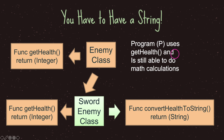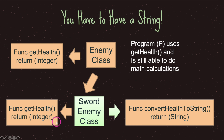Program P can call the enemy class's get_health function expecting an integer, and if we have program P point to the sword enemy class when get_health is called, it will in fact get an integer. And there you have it — voilà.